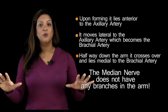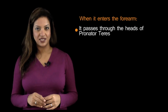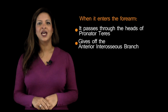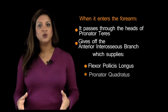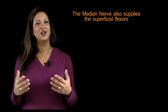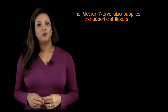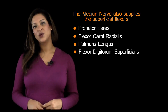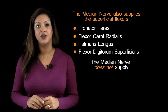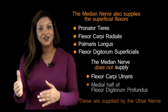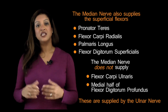The median nerve has no branches in the arm. In the forearm, it passes through the heads of pronator teres and gives off the anterior interosseous branch, which supplies flexor pollicis longus, pronator quadratus, and the lateral half of flexor digitorum profundus. The median nerve itself supplies the superficial flexors: pronator teres, flexor carpi radialis, palmaris longus, and flexor digitorum superficialis. The only two forearm flexors it does not supply are flexor carpi ulnaris and the medial half of flexor digitorum profundus — both supplied by the ulnar nerve.